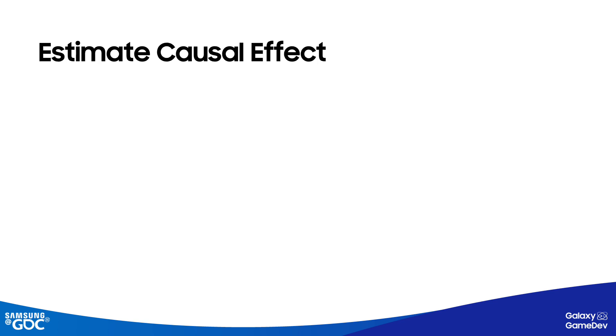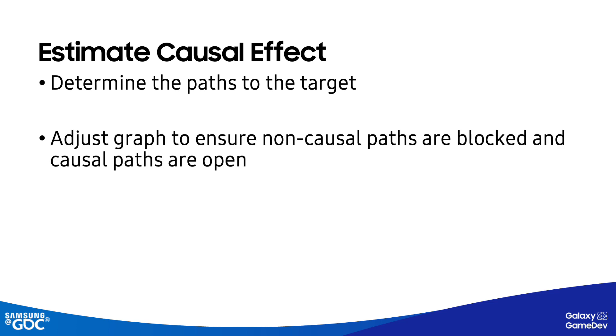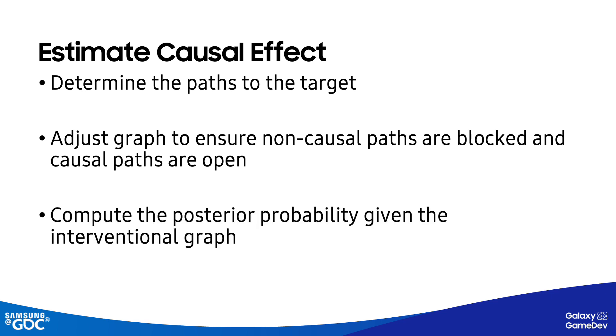Once we have our full model, both the structure and fitted probability distributions, we can now think about how we go about using that model to answer our original question of how the optimization parameter affects the performance measure. There are a lot of details I'll be omitting at this stage, but to briefly summarize what happens here, we first determine all the possible paths between the node we're intervening on, so that's our optimization parameter, and the target node, in which case we're looking at the median FPS node. We then carry out some operations to effectively block the paths that we're not interested in measuring. If you think back to the confounder example before, in effect we're carrying out similar operations that stop the flow through one path and leave only the paths of interest. And finally, we compute the posterior probability using this adjusted graph. I should say that many packages that are available automate a lot of this process for you, so that you only need to provide the abstract information about what you want to measure, and it will handle the details for you.